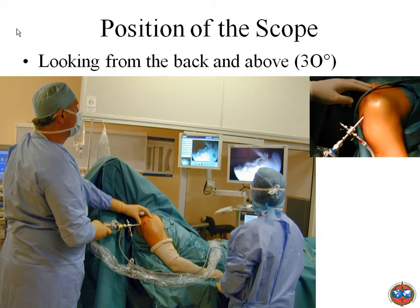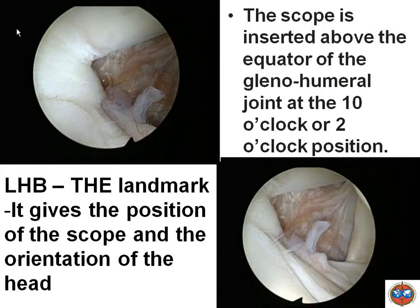When I put a scope in, I use the beach chair position. Many surgeons use lateral decubitus, many use beach chair — I have used it regularly and the advantage is that the installation is simpler and the possibility to repair is very good. When we go inside we should look for the key point of the glenohumeral joint, which is the long head of the biceps. The long head of the biceps is connected to the labrum.